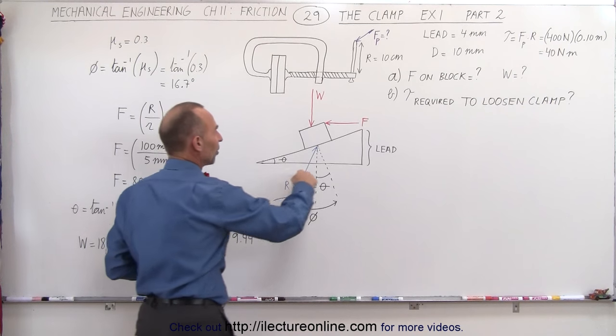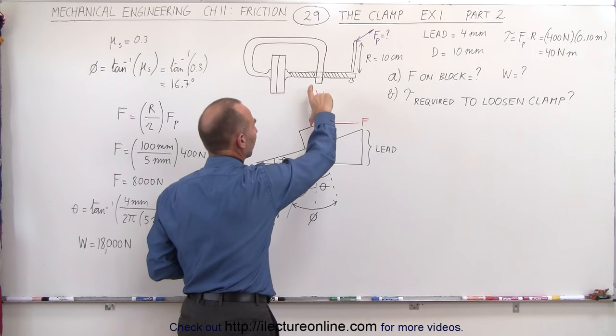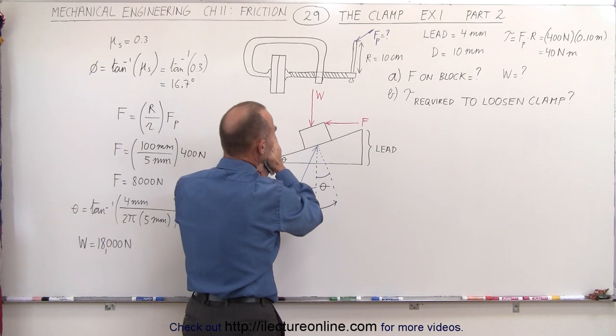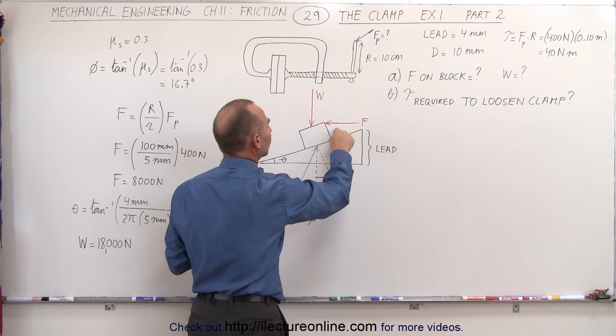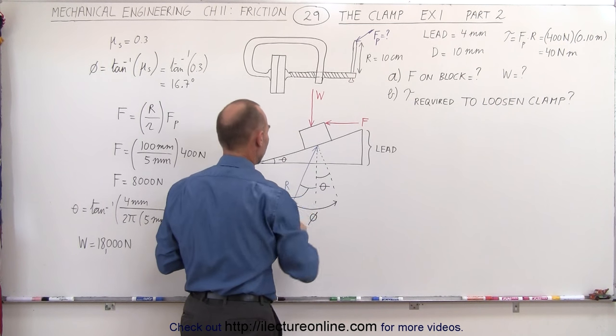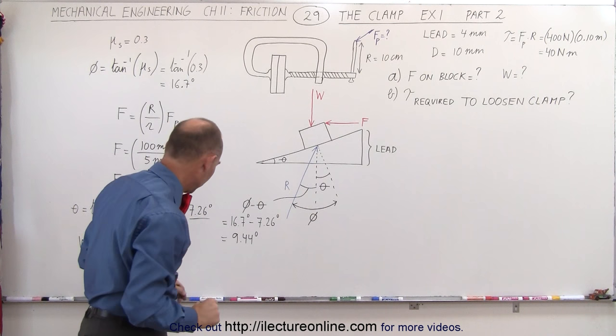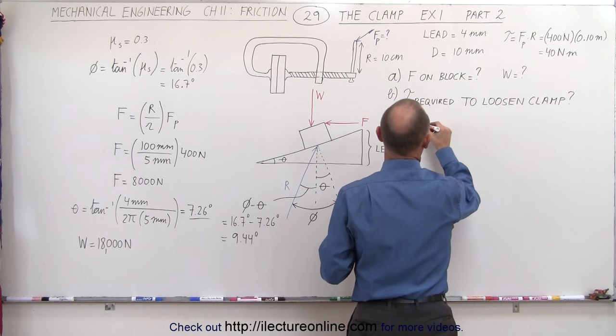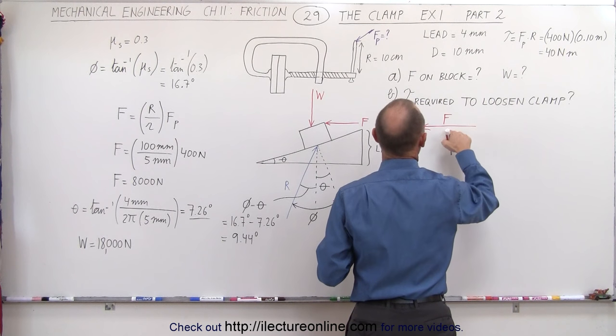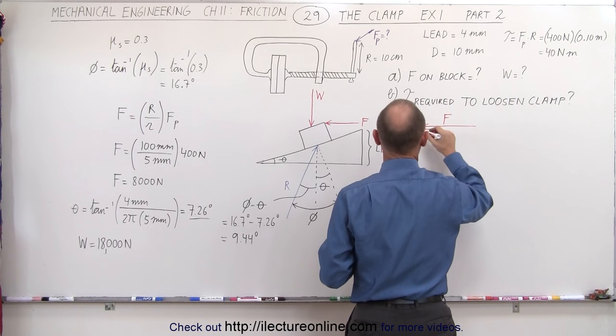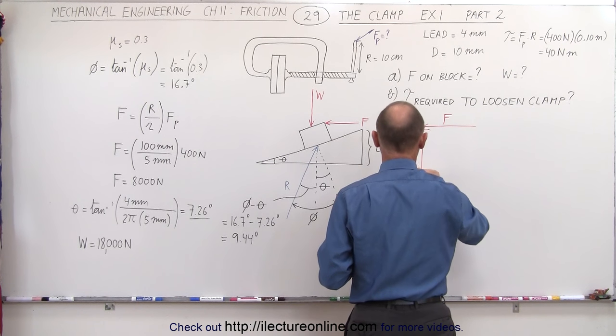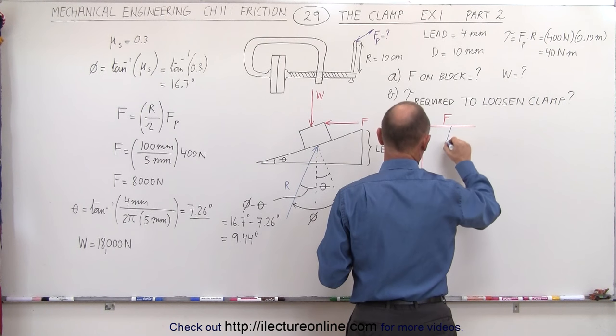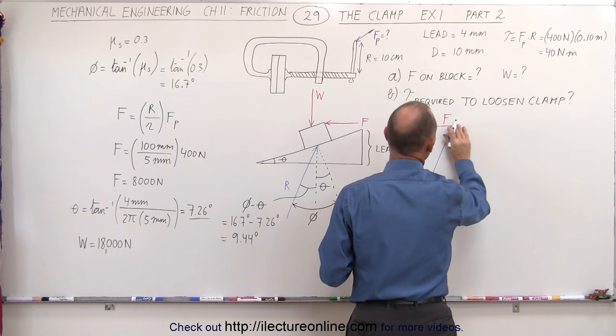We can now apply the sum of the forces equal to zero to these three forces: the weight, which is basically the force of the wood pushing back against the clamp; the force here required to push the clamp open; and the reactionary force. We're going to add those three forces together. Starting with this force, we have the force required to loosen the thread on the screw, then we have the weight W, and then we have the reaction force.